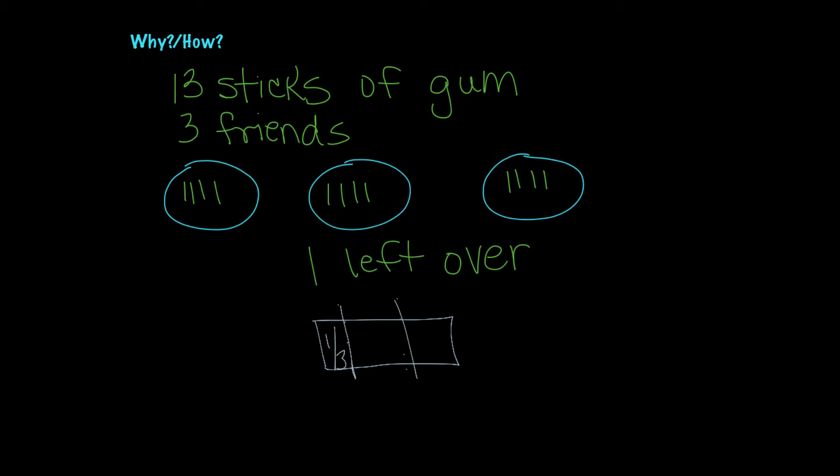And that would mean that each person would now get four and one-third sticks of gum. So this would be an instance where we would divide up the object and record it as a fraction.